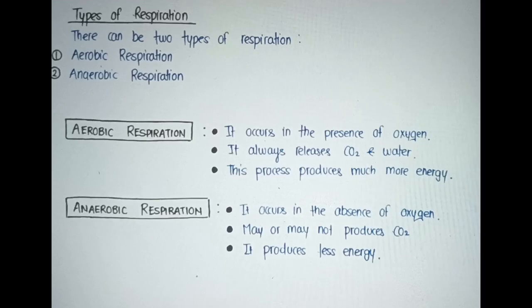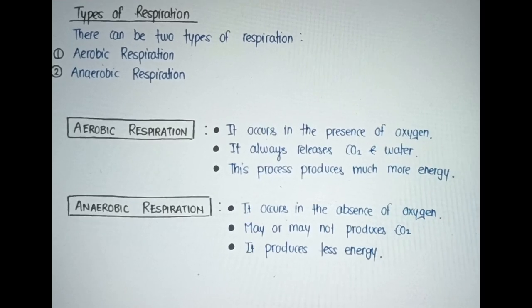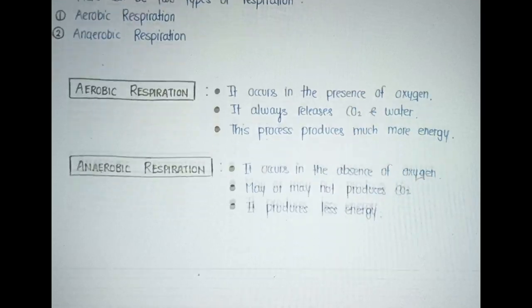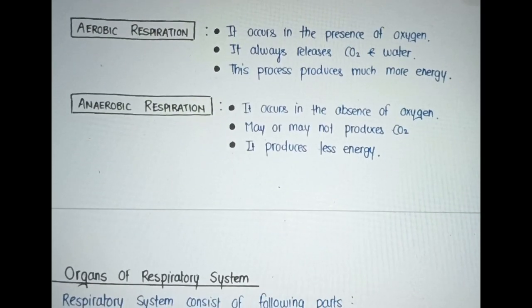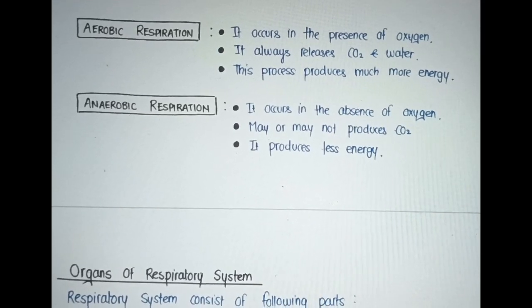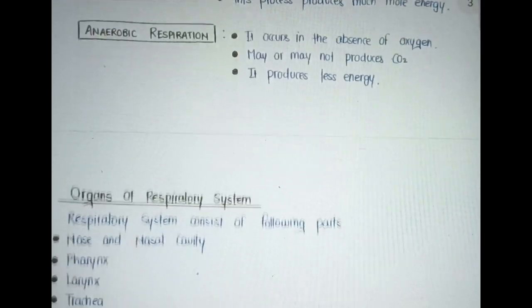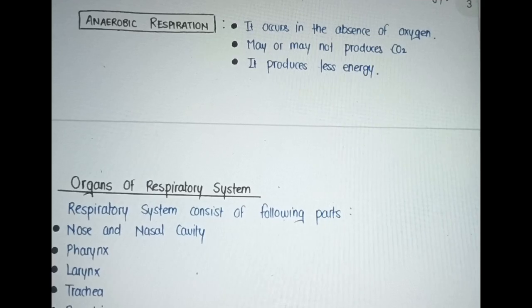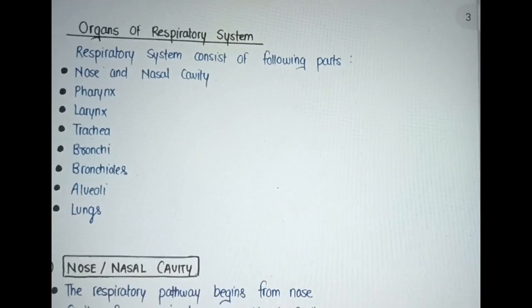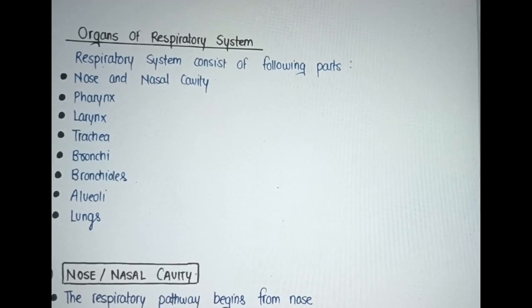Types of respiration. There can be two types: 1. Aerobic respiration occurs in the presence of oxygen. It always releases carbon dioxide and this process produces much more energy. 2. Anaerobic respiration occurs in the absence of oxygen, may or may not produce CO2, and produces less energy.